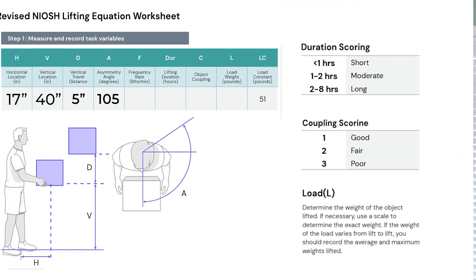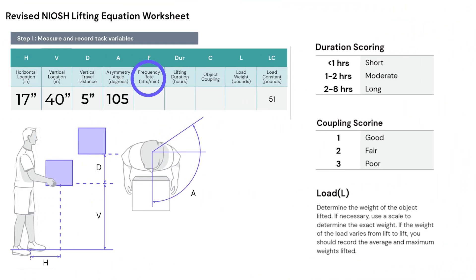Now, it's time to move on to number five, our frequency multiplier. Our frequency multiplier allows us to determine the number of lifts per minute and the length of time the lift takes. Our lifting frequency is defined by the average number of lifts per minute over a 15-minute period, based on standard work sampling from an overall work pattern. Our lifting duration categories include short duration, moderate duration, and long duration, based on continuous work time versus recovery time patterns.